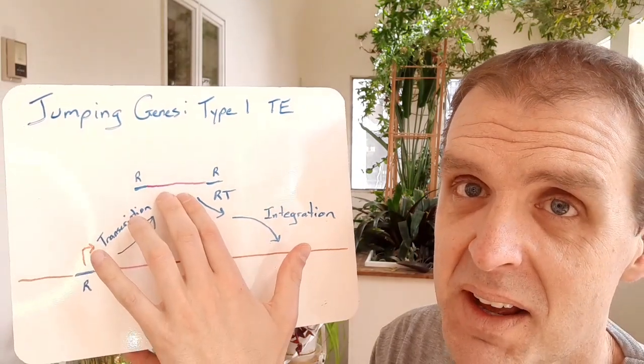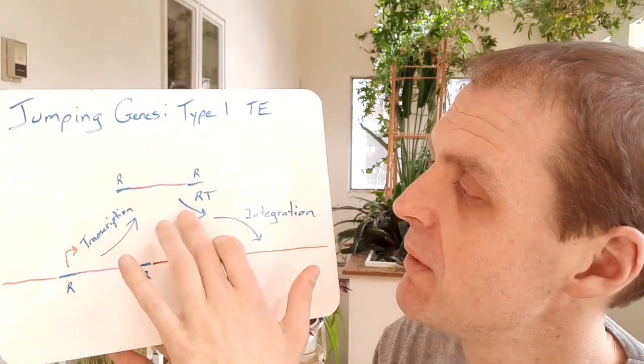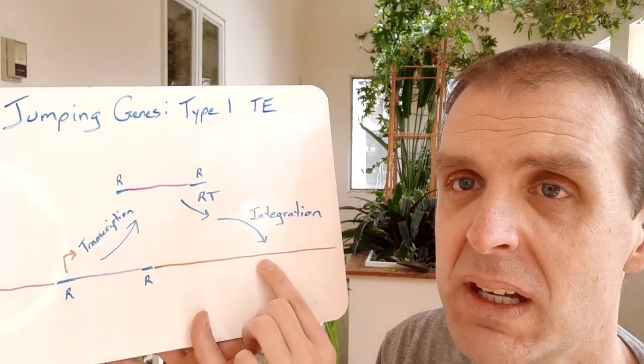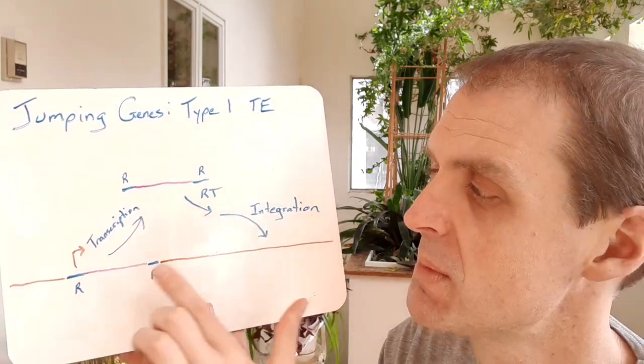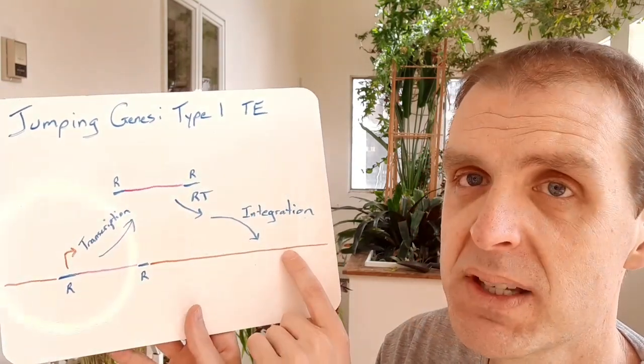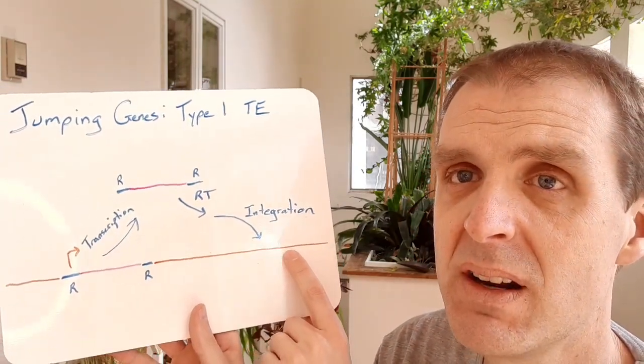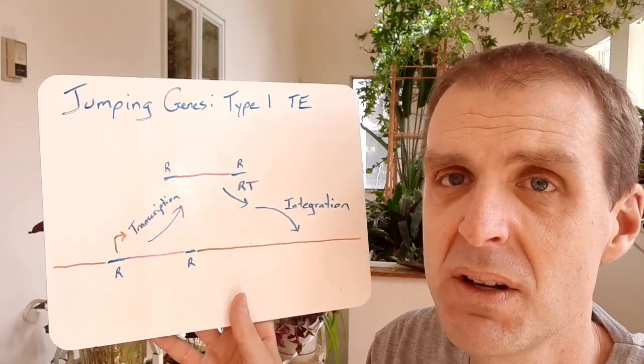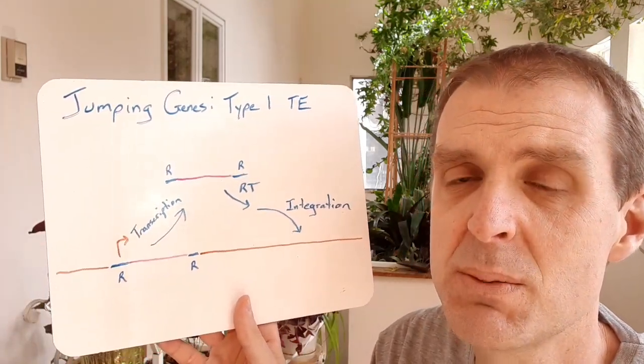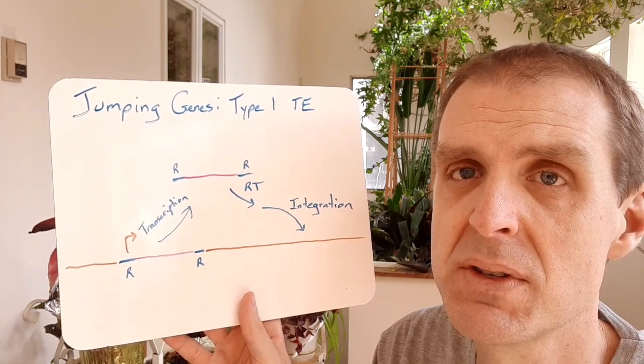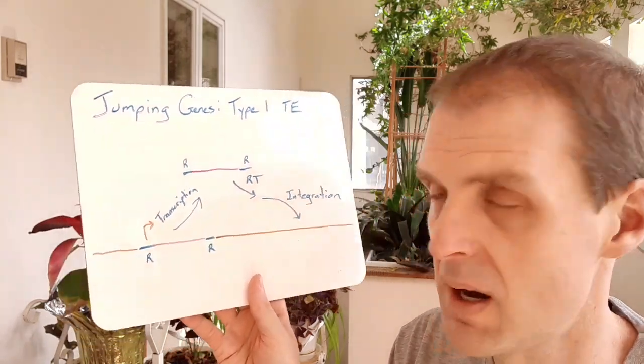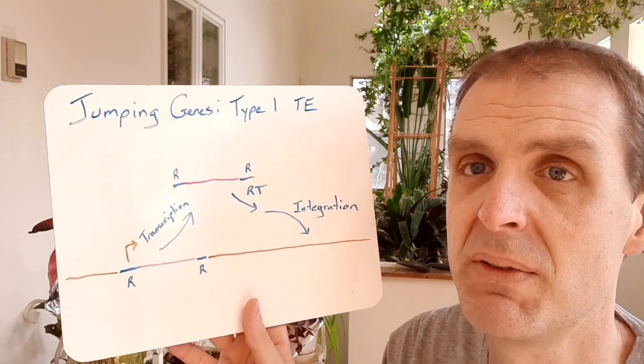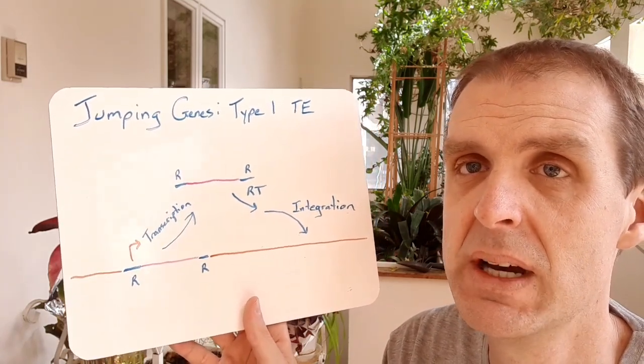This RNA intermediate can be reverse transcribed and then it can be integrated into another place in the genome. So you end up with your original copy plus wherever another copy gets integrated into the genome. That's why these are sometimes called selfish genetic elements, because they copy themselves. Your genome has to be on guard against these, and that might be the topic of another video, the defense system against these sorts of jumping genes.